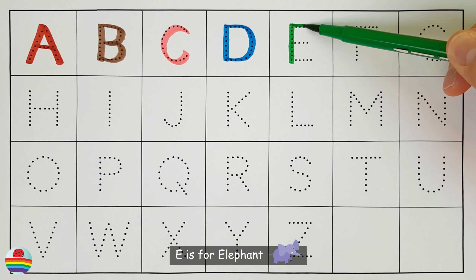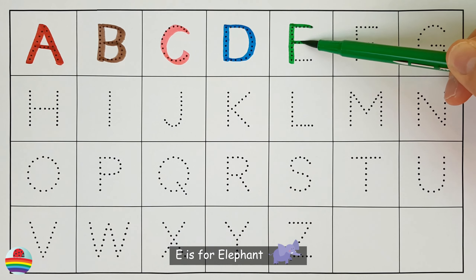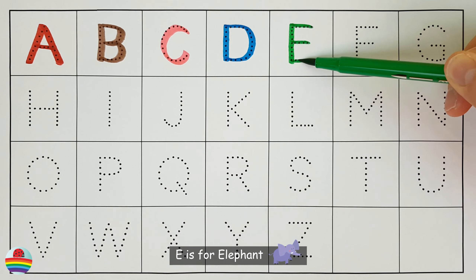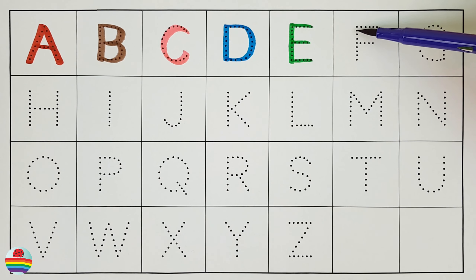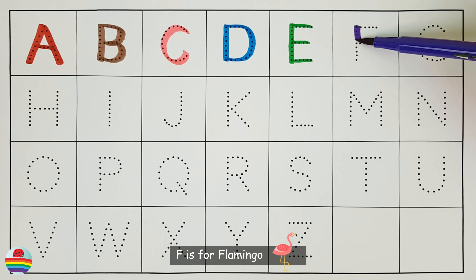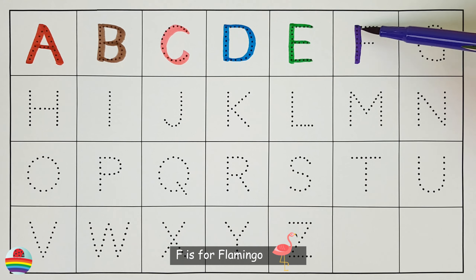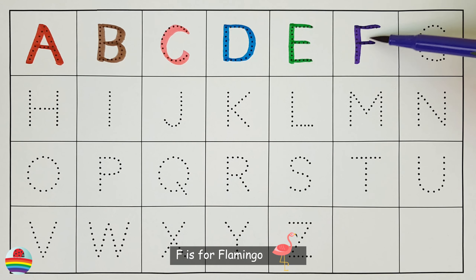E is for Elephant. F. F is for Flamingo.